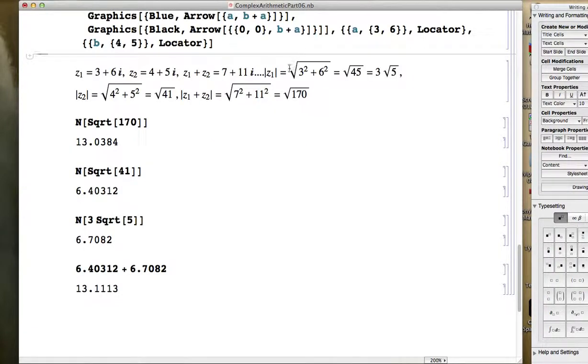We also focused on defining the idea of the modulus of a complex number, as well as illustrating the triangle inequality. When you write Z1 with absolute value signs around Z1, you call that the modulus of Z1, and it can be interpreted geometrically either as the distance between the point representing Z1 and the origin, or as the length of the vector representing Z1.